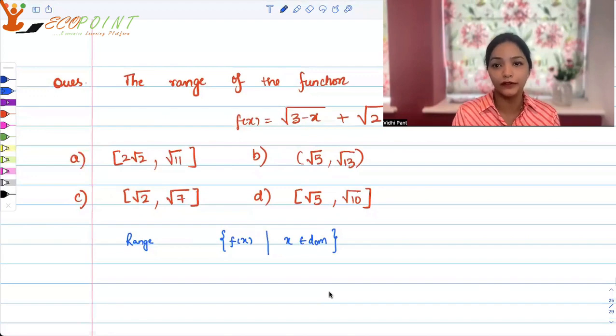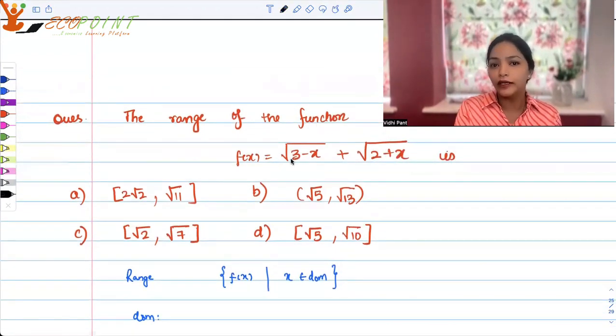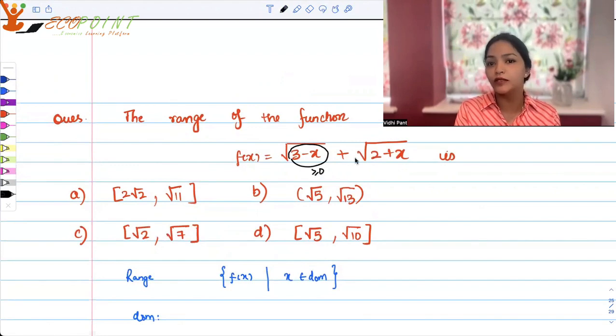For our purpose, we will first have to think what would be the domain for this function. It's not asked in the question, but we should know because accordingly we will figure out what kind of f(x)'s can be generated. For domain, the restrictions would be I have square roots here, so whatever is inside the square root has to be positive.